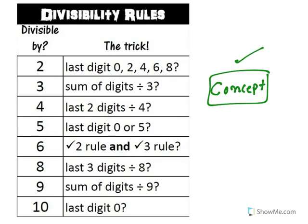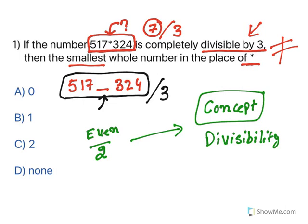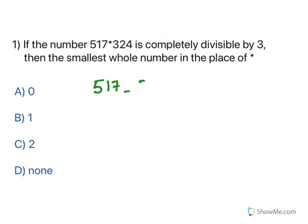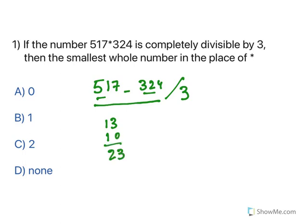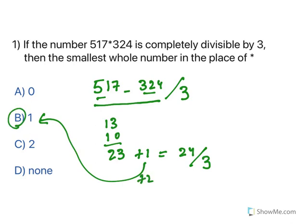Now applying this: the question asks whether 517*324 is divisible by 3. Adding all known digits: 5+1+7+3+2+4 = 22. No wait: 5+1=6, 6+7=13, 13+3=16 — sorry, let me recount: 5+1+7+3+2+4 = 22+the missing digit. If you add 1, it becomes 24, and 24 is divisible by 3. If you add 2 it becomes 25, not divisible. If you add 0 it stays 23, not divisible. So the answer is 1.